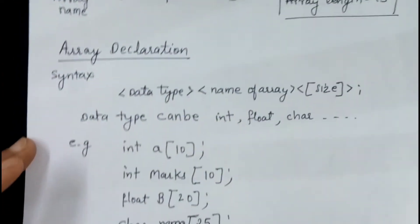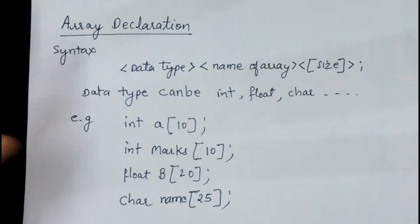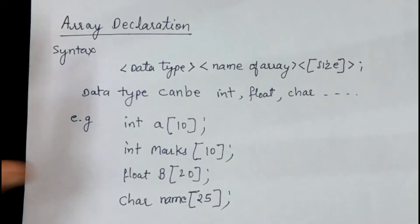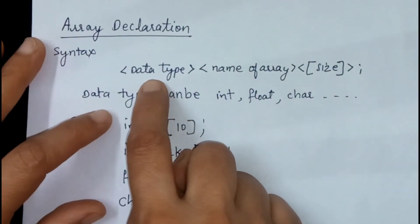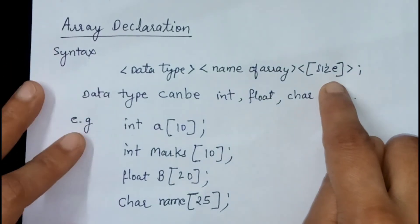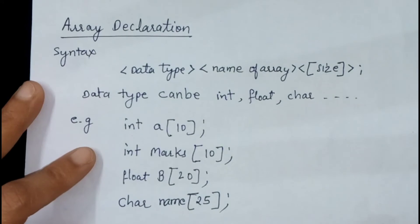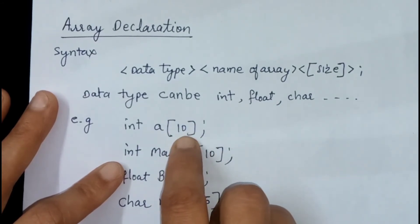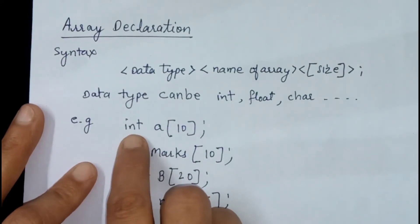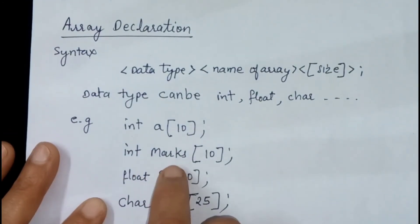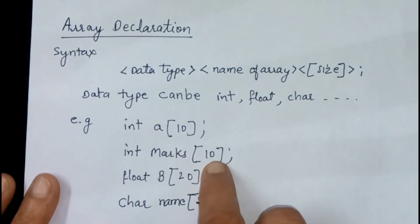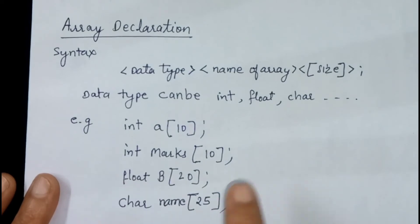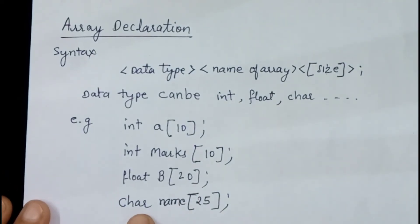Now we will study array declaration. How can we declare arrays? Arrays can be declared by typing the data type, then the name of the array, and then specifying the size of the array. The data type can be integer type, floating type, or character type. For example: int a[10]; means 'a' is an integer type array with dimension 10. Marks is an integer type array with dimension 10. B is a floating type array with dimension 20. And 'name' is a character type array with dimension 25.